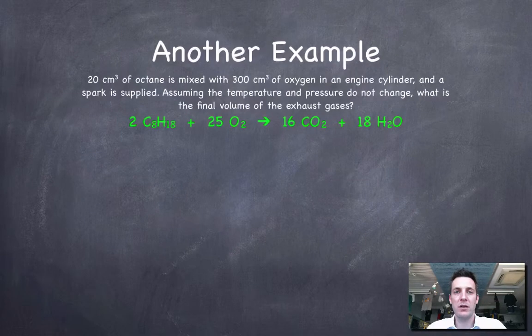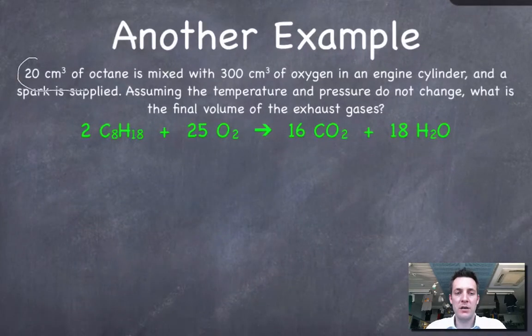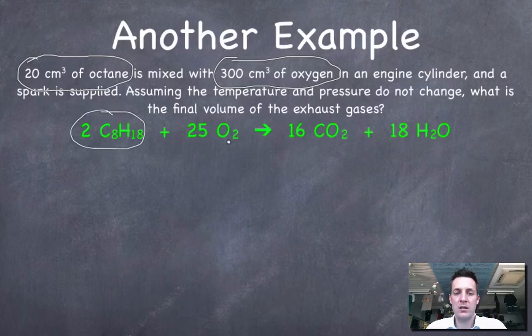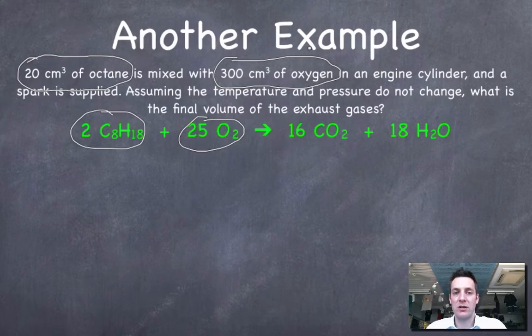Here's a slightly more complex one. We might be looking at this and thinking, oh, there's a sign here. I'm being given the amount of one substance and of another. That might be making me think, oh, that's a limiting reagent question. So here's my octane, here's my oxygen. And in actual fact, we're imagining this is what's going on in a car engine. A spark is supplied. Assuming the temperature and pressure do not change. In other words, the temperature and pressure that the gases are mixed at is the same as the temperature and pressure that they escape from the cylinder at. So what is the final volume of the exhaust gases?